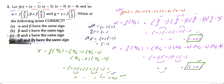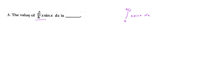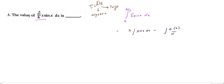Question 3: find the value of the integral from 0 to π/2 of x·sin(x) dx. We will use integration by parts. The ILATE rule places Algebra before Trigonometry, so we take x as the first term and sin(x) as the second term. Applying the formula: x·∫sin(x)dx minus ∫[d(x)/dx · ∫sin(x)dx] dx.